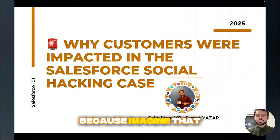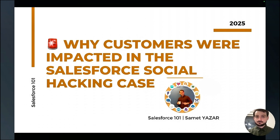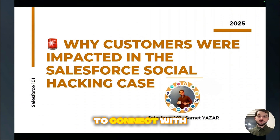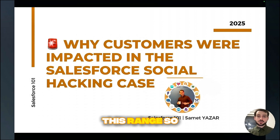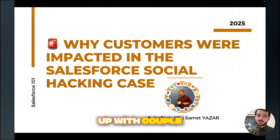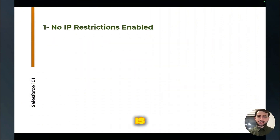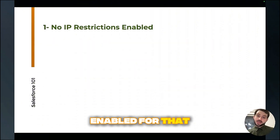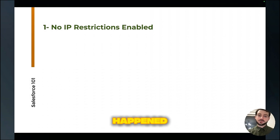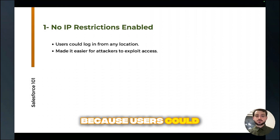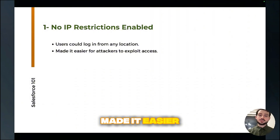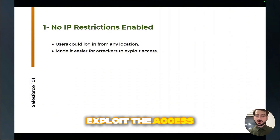Why? Because with IP restrictions, you just put a restriction so that if they try to connect with a computer not inside of your defined IP range, it is simply blocked. The first root cause is that no IP restriction was enabled for that company. That's why it happened — users could log in from any location, which made it easier for attackers to exploit access.